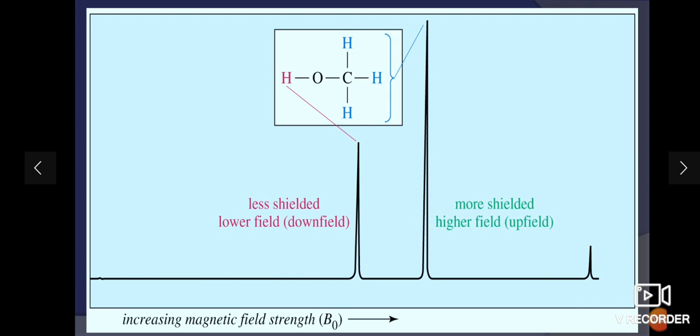The NMR spectrum of methanol will look like this. There are two different protons, CH3OH. The hydrogen attached to O is in different environment, whereas the hydrogens attached to carbon are in different environment. We will get two types of signals, where CH3 proton is more shielded and OH is less shielded.